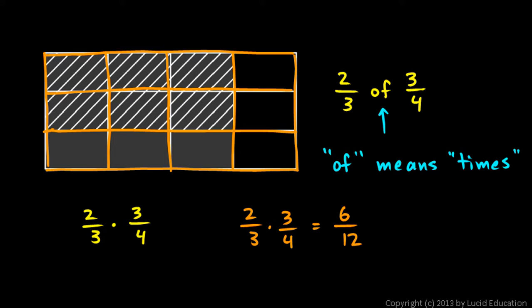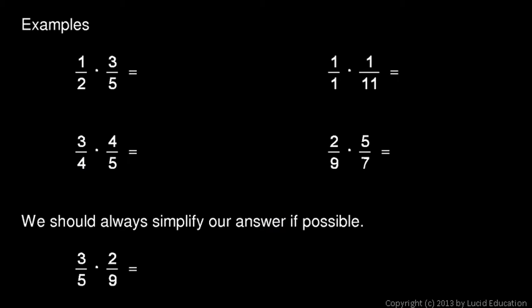So with that in mind, let's do some examples. So here are some examples. And these are really easy because the procedure is very simple. To multiply two fractions, just multiply the numerators. So 1 times 3 is 3. That gives me the numerator of my answer. And multiply the denominator. 2 times 5 is 10. So 1 half times 3 fifths is 3 tenths. Pretty simple.